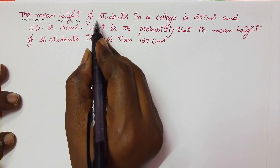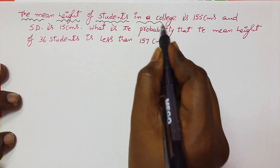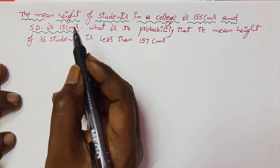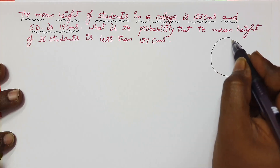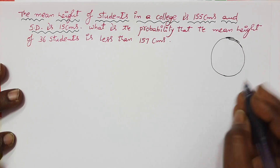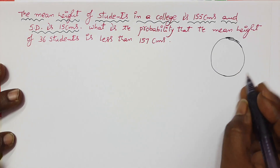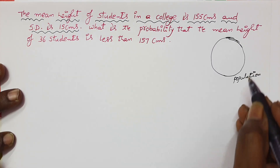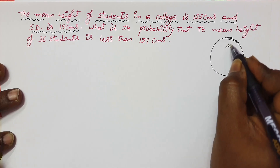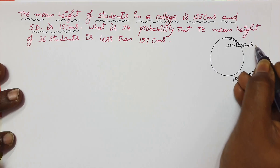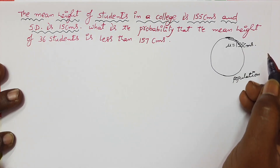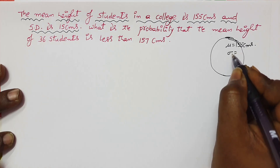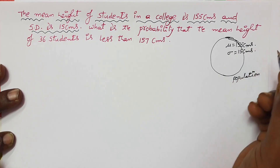The mean height — mean means average — the average height of students in your college is 155 centimeters, and standard deviation is 15 centimeters. There is a college; we don't know the total number of students, so we treat this as a normal or infinite population. The average height of each student is 155 centimeters, and the standard deviation sigma is 15 centimeters.